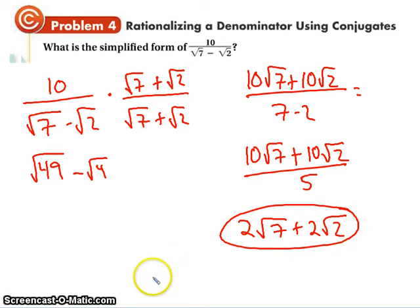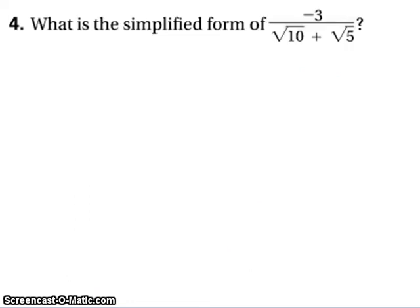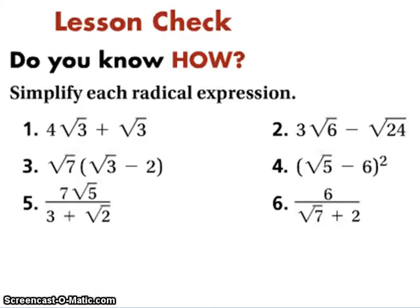Once again, if one of these outside numbers was different, it couldn't be factored that way, then we couldn't do it. Give that one a try. Multiply by the conjugate. And then we have the lesson check. All right. See ya.